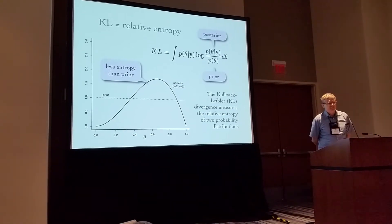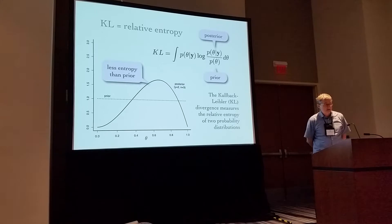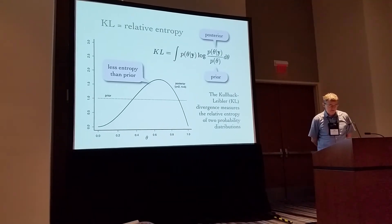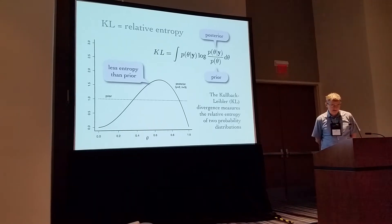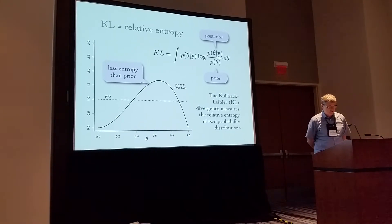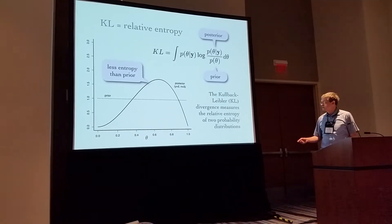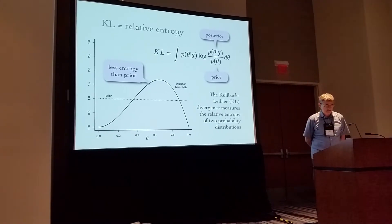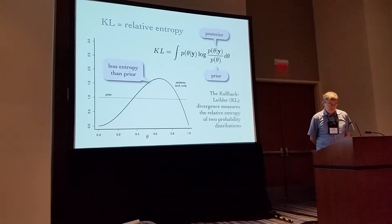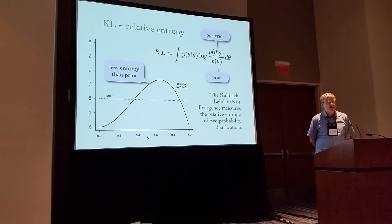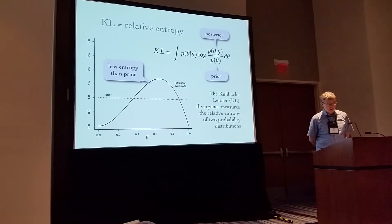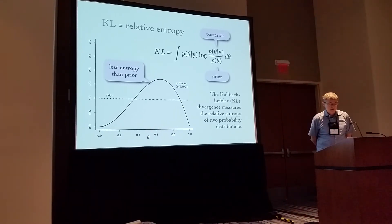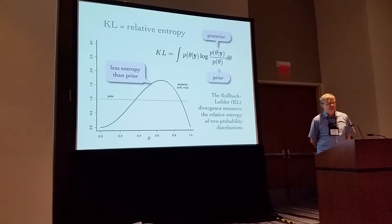In this example, a coin was flipped three times (n equals three) and came up heads twice (y equals two). It's easy to see that the information contained in only these three flips is enough to concentrate the posterior and discourage consideration of some extreme values of theta, which is the unknown true probability that the coin will land heads on any given flip. If no information about theta was present in the data, the posterior would equal the prior, and the KL divergence measure would be zero.